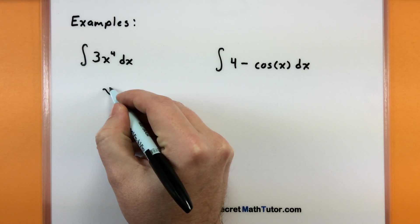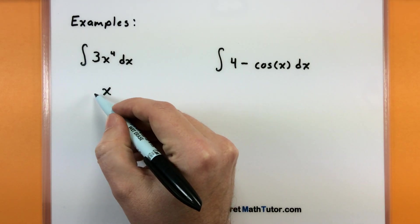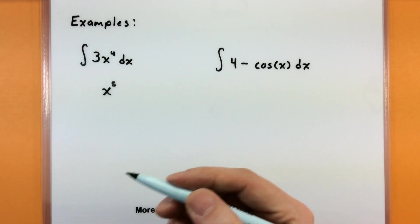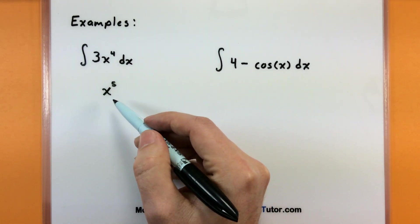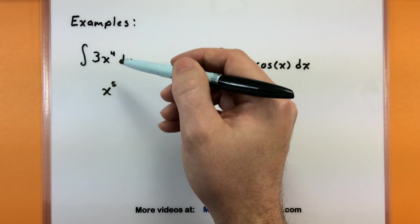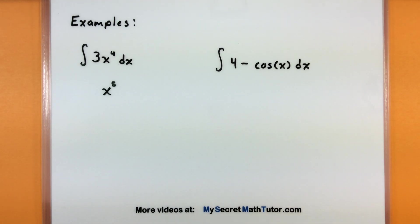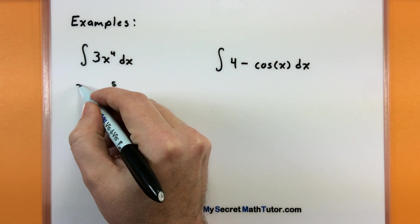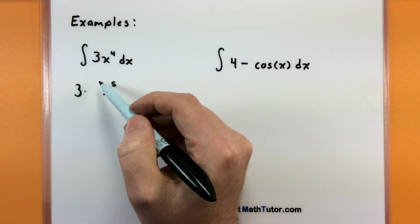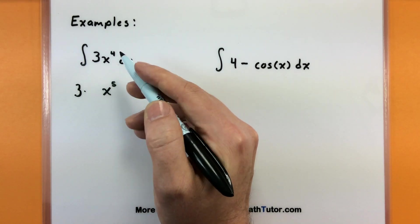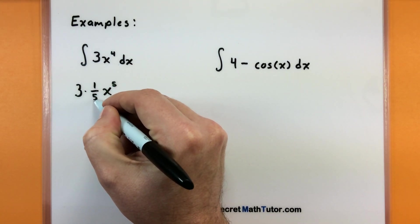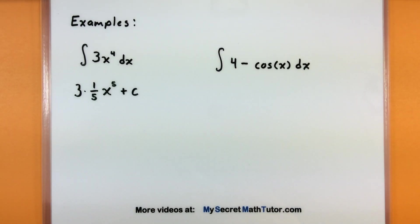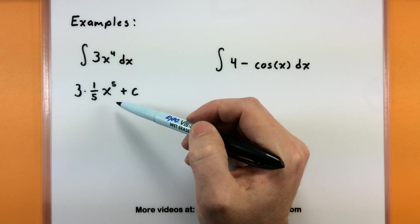When I take derivatives I bring down the power and reduce it by one, so I think this power must have been five — that's the only way reducing it would give four. Going in the other direction I would think of adding one to the power. The three is a constant so it's just going to hang out. I'll say the coefficient out front should be one-fifth, then we'll put our constant. It's a big process to think backwards like that, but let's check.